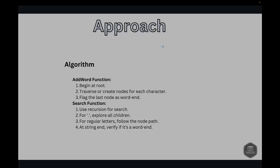To solve this problem, we can use a trie — a prefix tree — to store the words, and implement a search function that can handle wildcard characters. First, we define a TrieNode class. This class represents each node in our trie. Each node will have a dictionary of children nodes and a boolean flag to mark the end of a word.